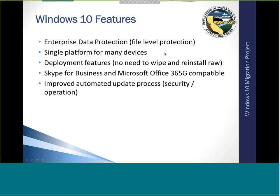One of the new features in Windows 10 that's part of the increased security is that, instead of folder-level protection that we have on our network, it can actually generate file-level protection. It can set security on individual files, which is one of the things that ties into the OneDrive that we're going to have coming, that Windows 10 is compatible with. You'll find more about that soon.